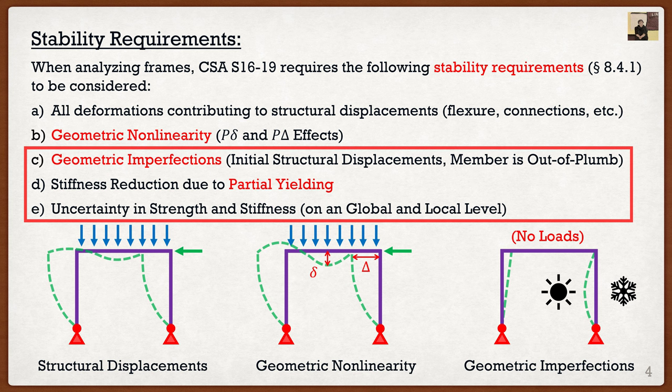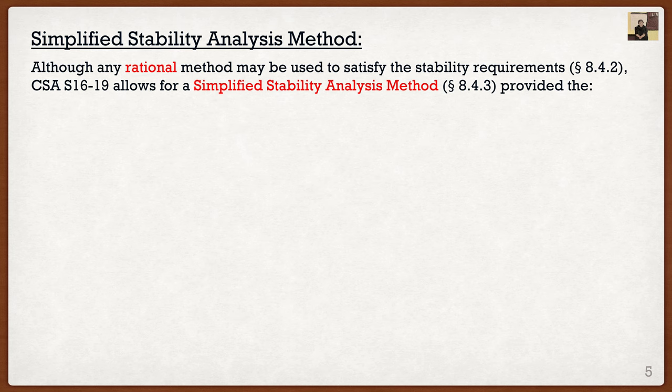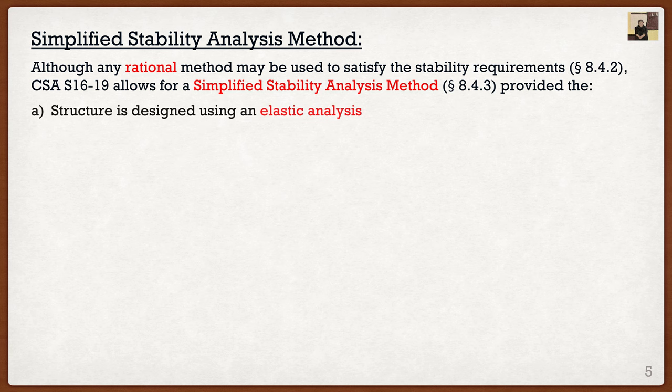Taking a step back: requirement A is something we've always done before — no big deal. Part B, geometric non-linearity, is new but we're talking about it right now. Parts C through E involve notional loads, which are also simple. When looking at these requirements in CSA, clause 8.4.2 says any rational method used to satisfy these requirements is valid. However, CSA is smart — it gives us a simplified stability analysis method in clause 8.4.3. Provided that three things are true, you can use this method. The first is that the structure is designed using an elastic analysis — of course we're going to do that anyway, keeping everything elastic.